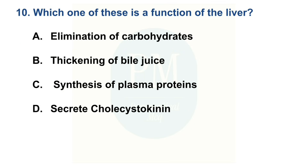Which one of these is a function of the liver? Option A: Elimination of carbohydrates. Option B: Thickening of bile juice. Option C: Synthesis of plasma proteins. Option D: Secretion of cholecystokinin. The correct option is Option C: Synthesis of plasma proteins.